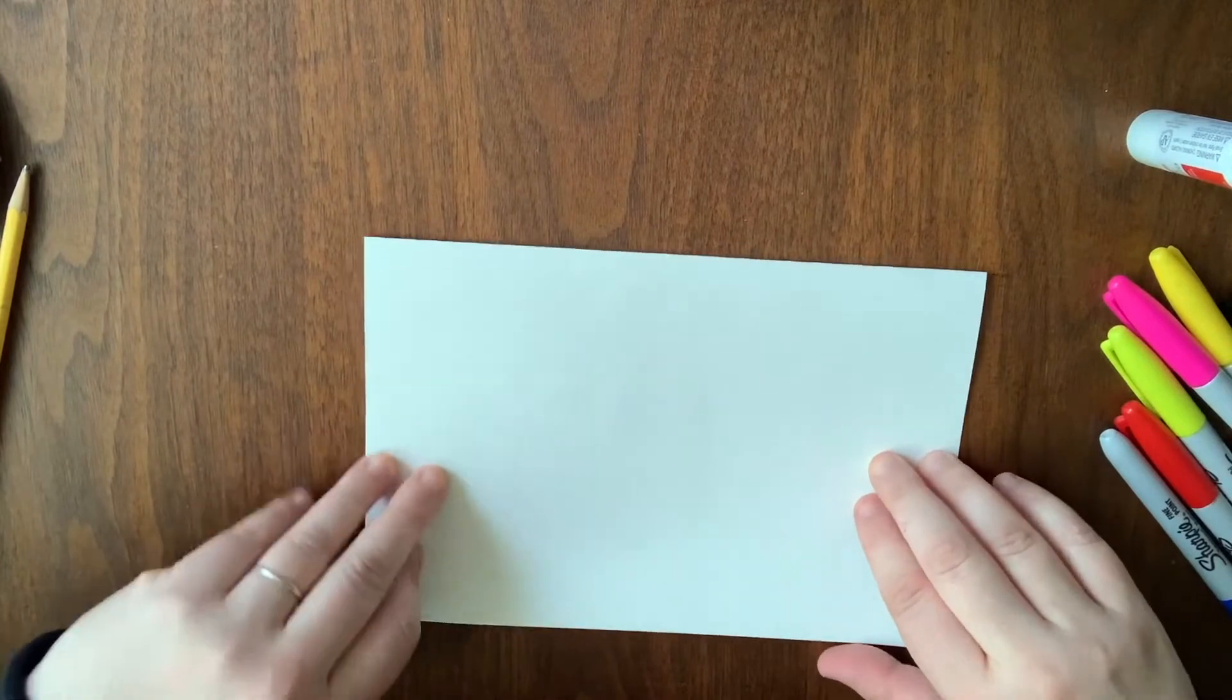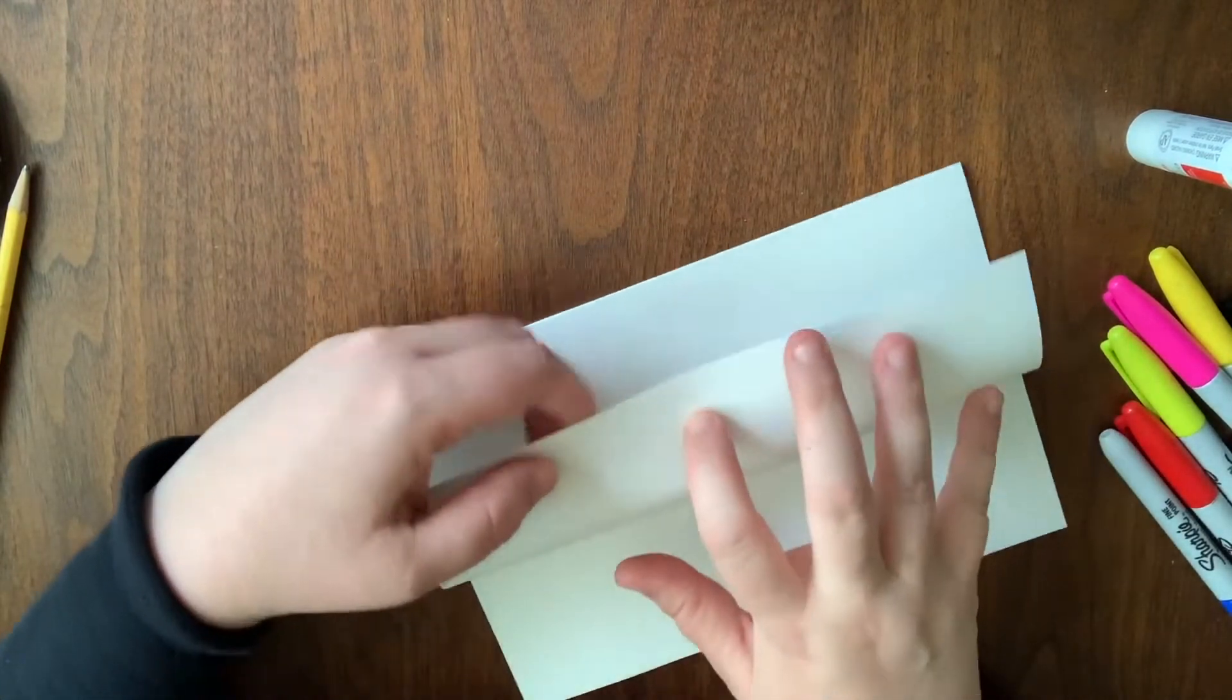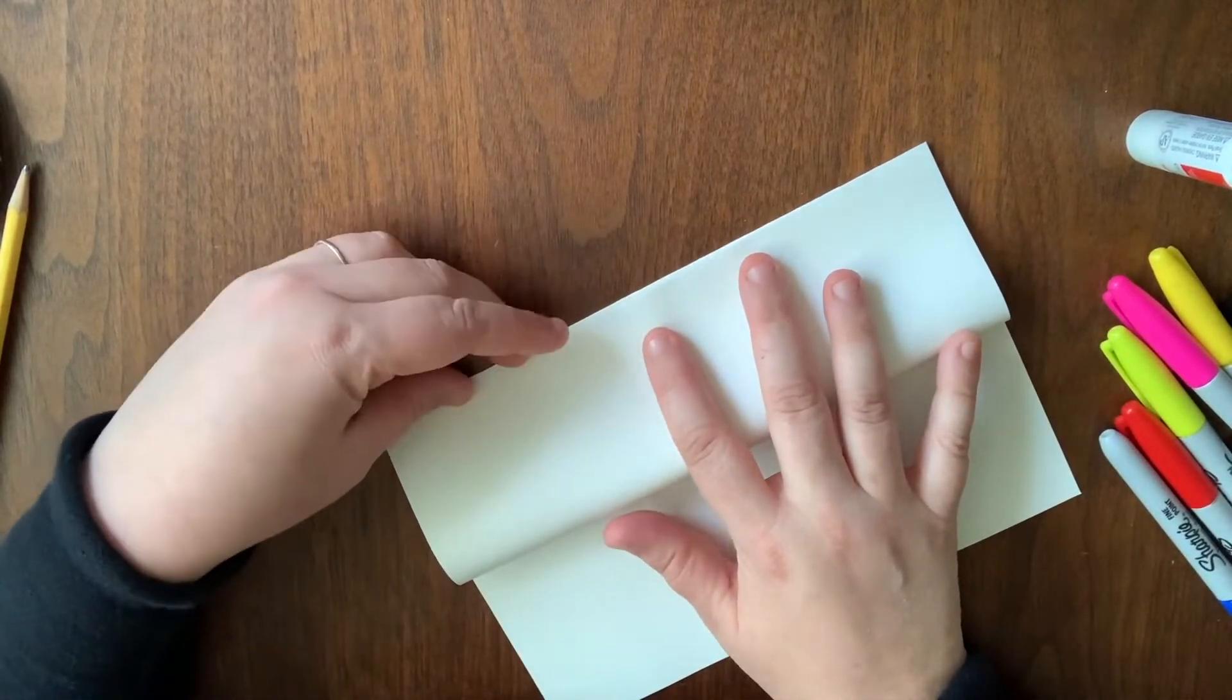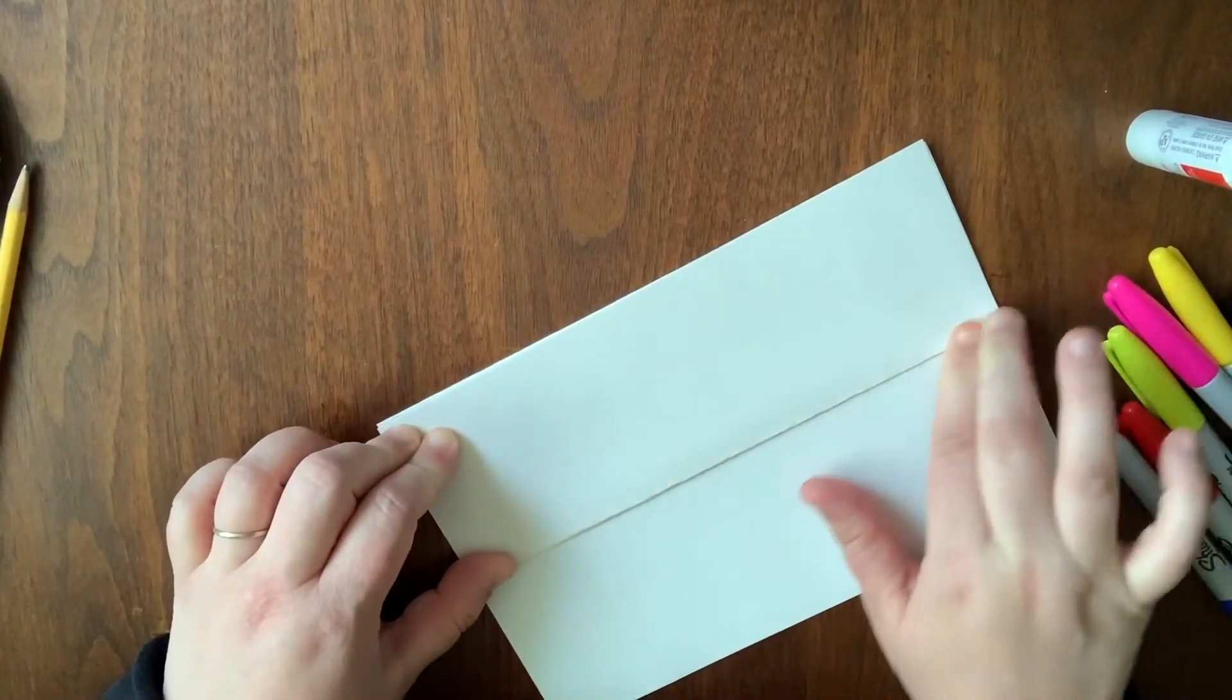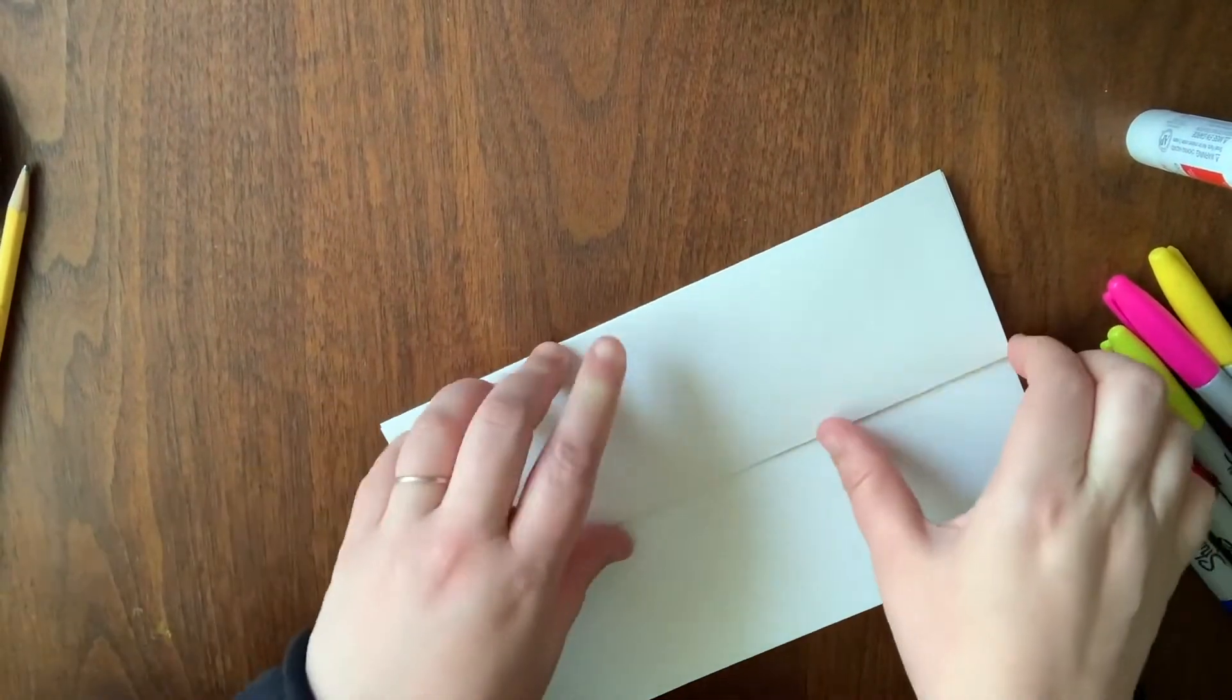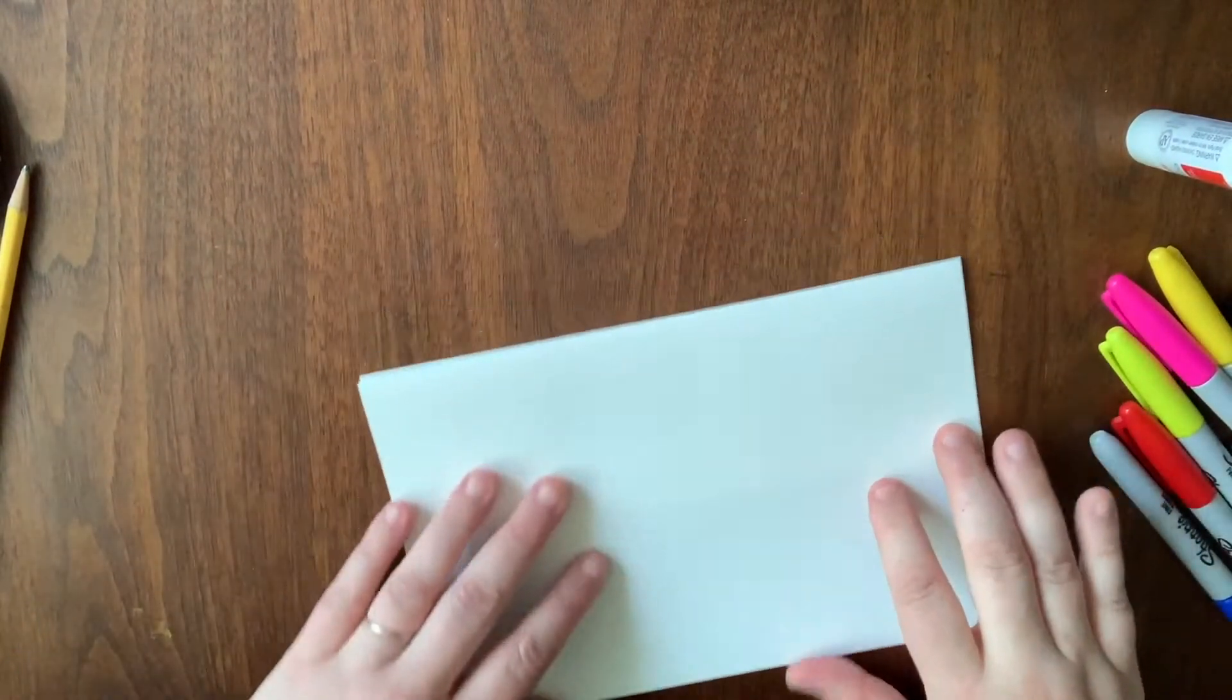Turn your paper and take each side and fold it towards the middle, towards the folded edge. Flip it over and do the same to the other side.